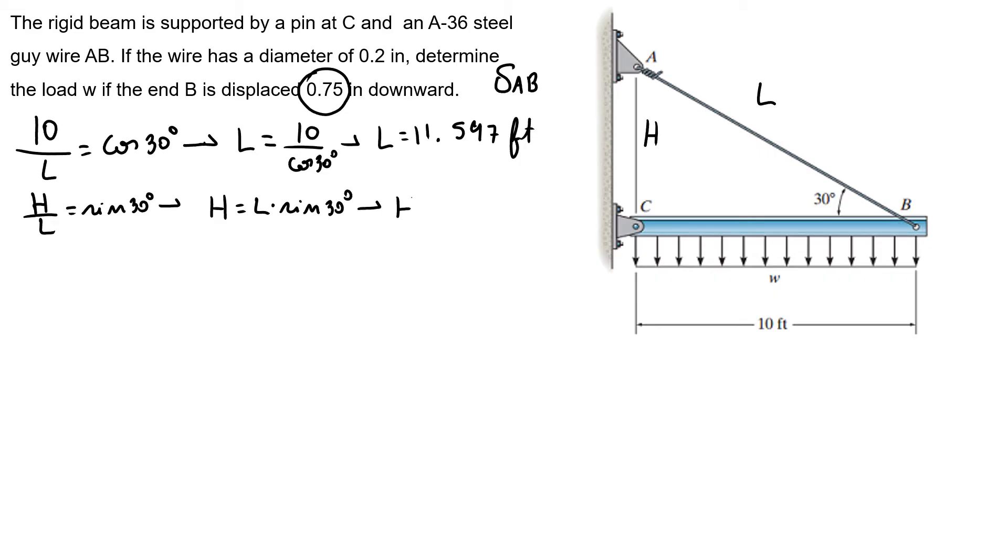Now I have a new triangle because the end B will go downwards 0.75 inches. That's the same as 0.0625 feet. And then I don't have my 30 degree angle anymore. So to discover my new triangle, instead of H it will be H plus 0.0625 feet, and here I have my 10 feet. So I have to discover my L prime.